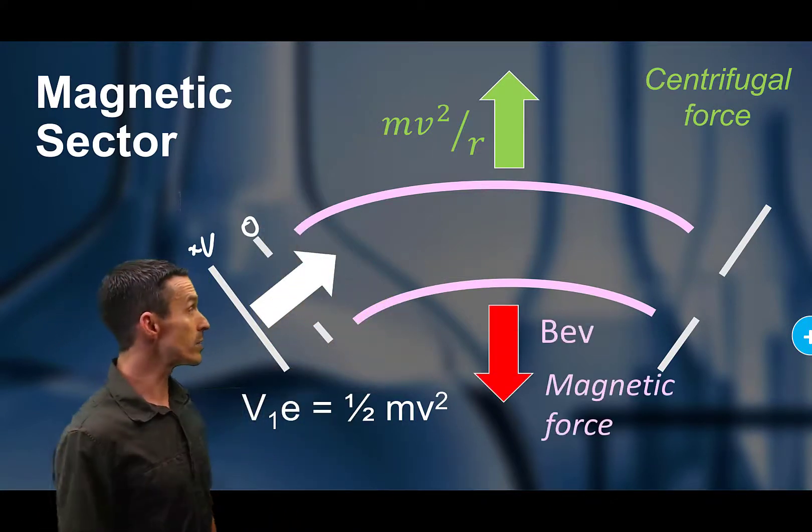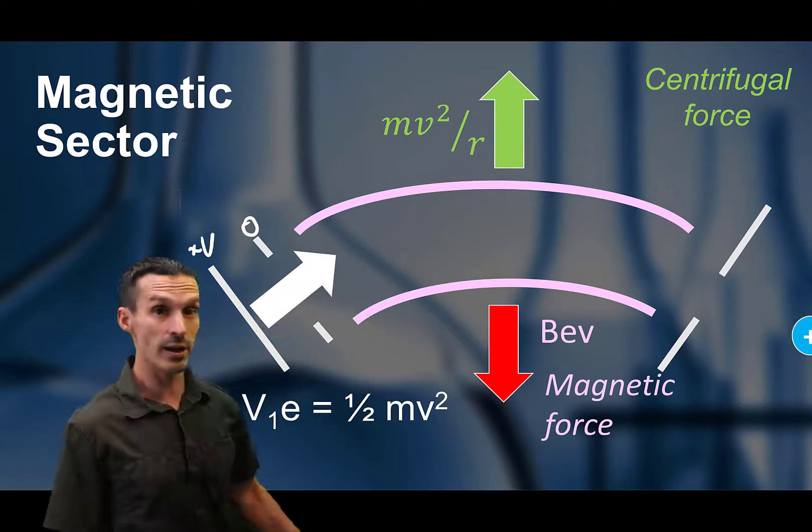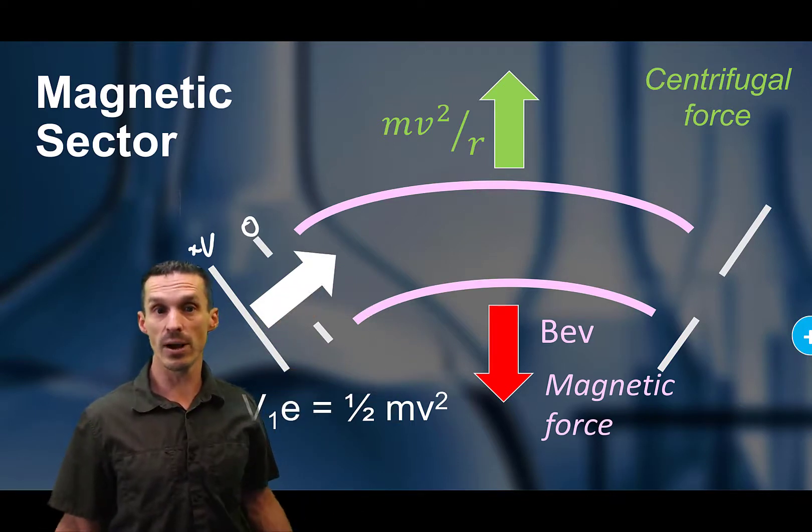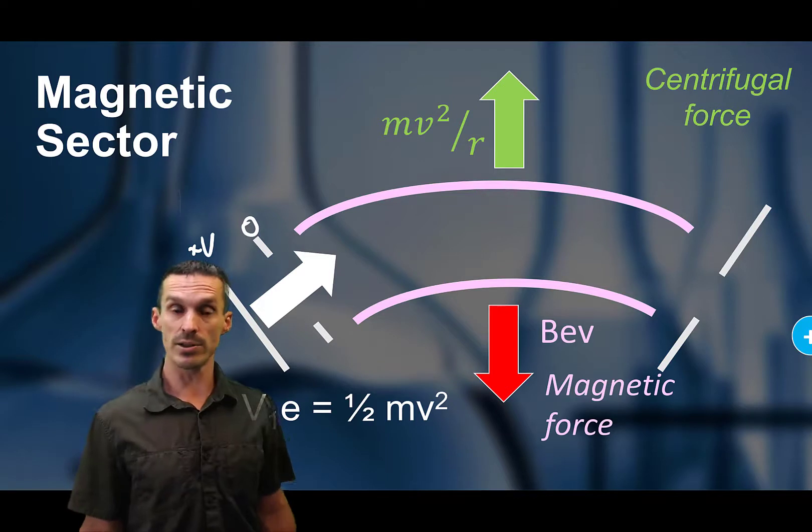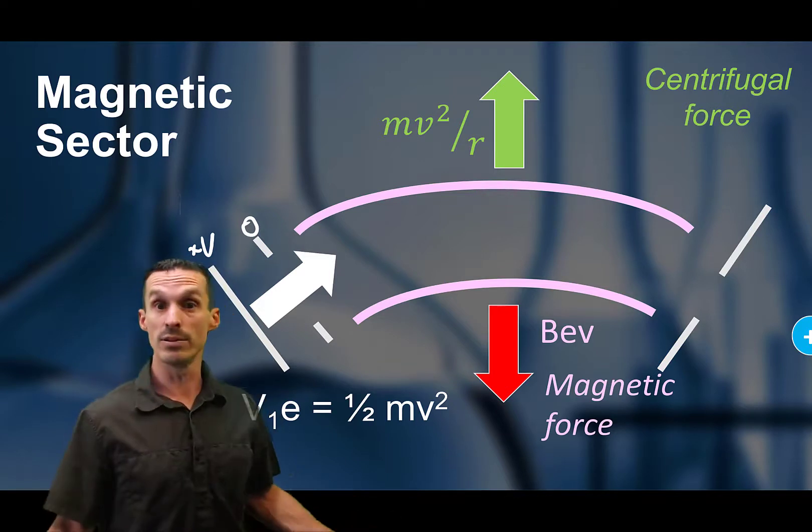Now when we talk about the force of the ion that's being pushed by the magnetic field, it depends on the field strength, the ions charge, but also on its velocity. So B times e times v.